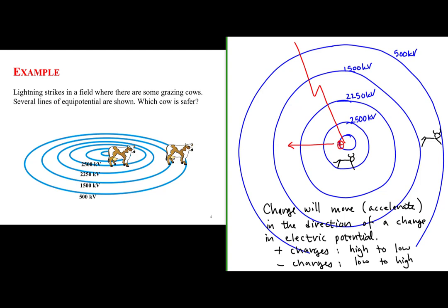A charge current is dangerous if it can move across your body. What's in the middle of your feet and your head is your heart. So between each set of the cow's feet — between the hind feet and the fore feet — is their heart. For the cow with both feet on the same equipotential line, the difference in electric potential is approximately zero. Since the difference in electrical potential between the feet of that cow is approximately zero, it's going to be unlikely for charge to move across that cow's body and through its heart to electrocute it.